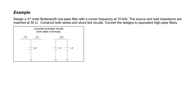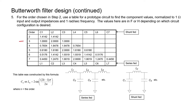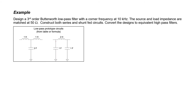Let's look at an example. We want to design a third order Butterworth low-pass filter with a corner frequency of 10 kilohertz. The source and load impedances are matched at 50 Ohms. We'll construct both series and shunt-fed circuits. Here's what the low-pass prototype circuits look like — since we're designing a third order filter, I refer to row number three on the chart. The three circuit element values are 1, 2, and 1, regardless of whether the filter is series-fed or shunt-fed. For the series-fed filter the units are Henrys, Farads, and Henrys; for the shunt-fed circuit the units are Farads, Henrys, and Farads.